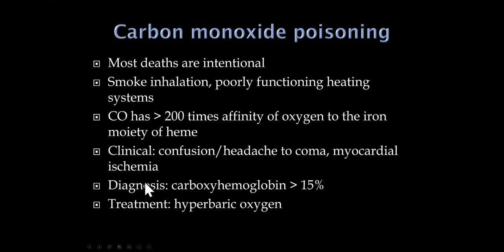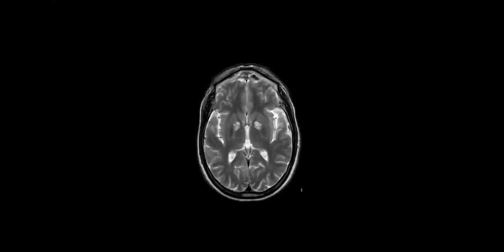We can diagnose carbon monoxide poisoning by checking the carboxyhemoglobin level, and treatment includes hyperbaric oxygen. The reason these specific metabolic comas are highlighted is their specific findings — anion-gap metabolic acidosis in methanol, and bilateral ischemic or hemorrhagic lesions in the globus pallidus on MRI or at autopsy in carbon monoxide poisoning.